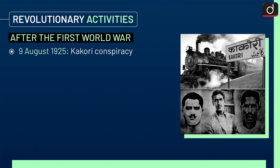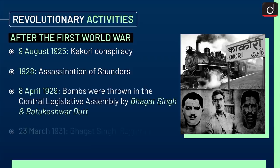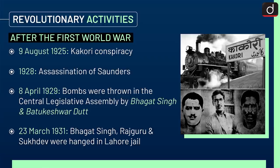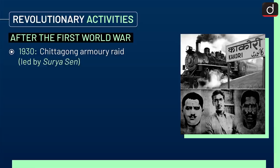Activities after the First World War: On 9 August 1925, the Kakori Conspiracy took place. In 1928, Saunders was assassinated. On 8 April 1929, bombs were thrown in the Central Legislative Assembly by Bhagat Singh and Batukeshwar Dutt. On 23 March 1931, Bhagat Singh, Rajguru, and Sukhdev were hanged in Lahore jail. And in 1930, the Chittagong Armoury Raid was led by Surya Sen.